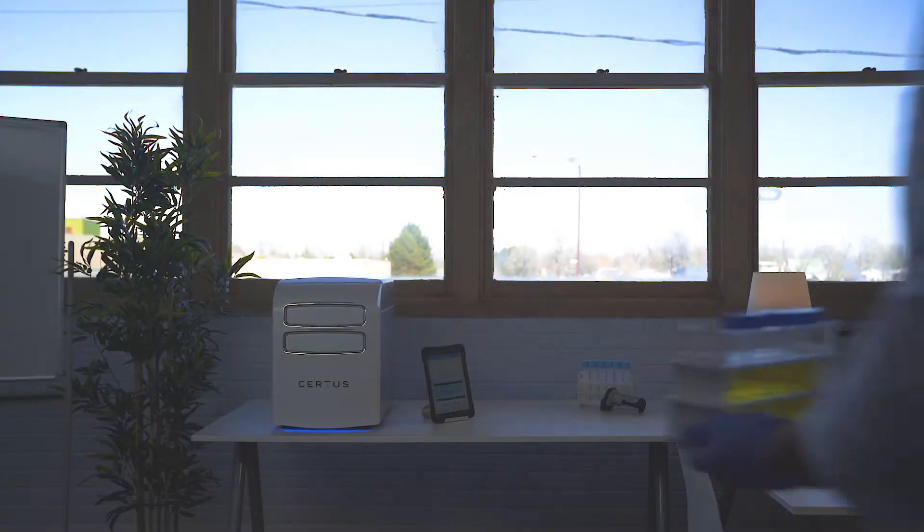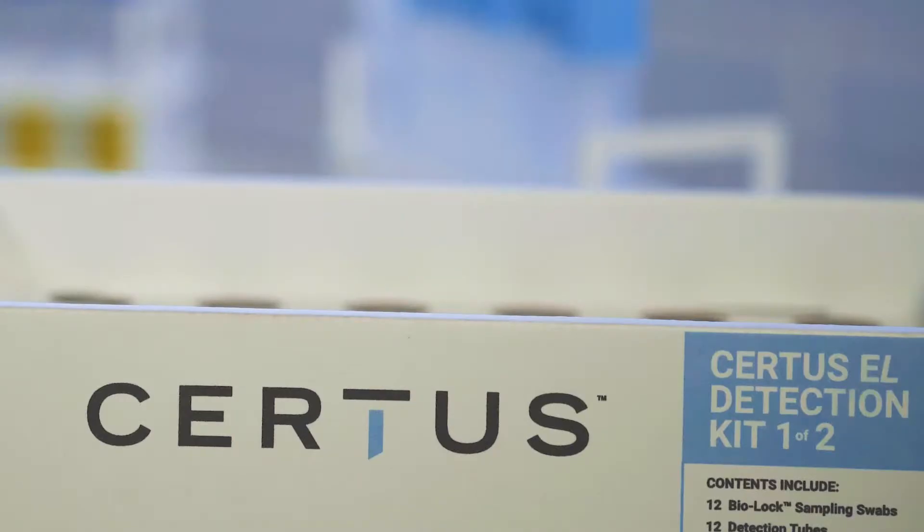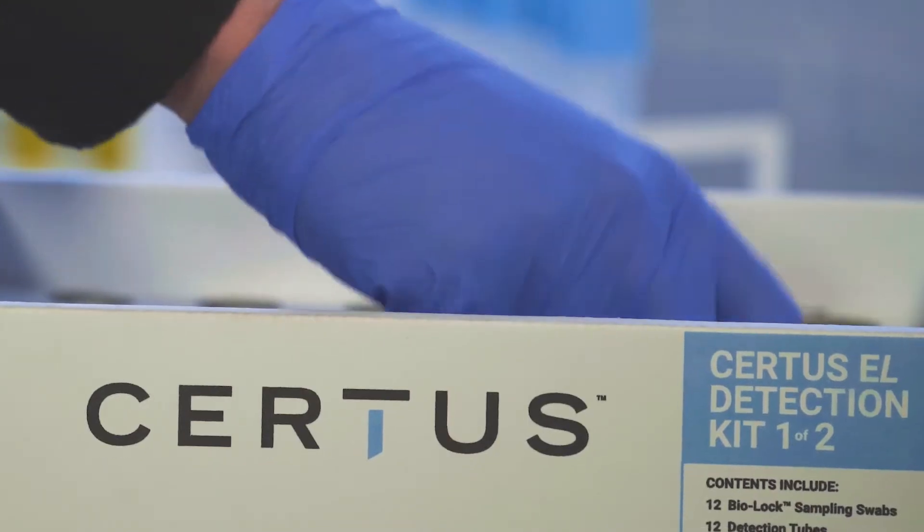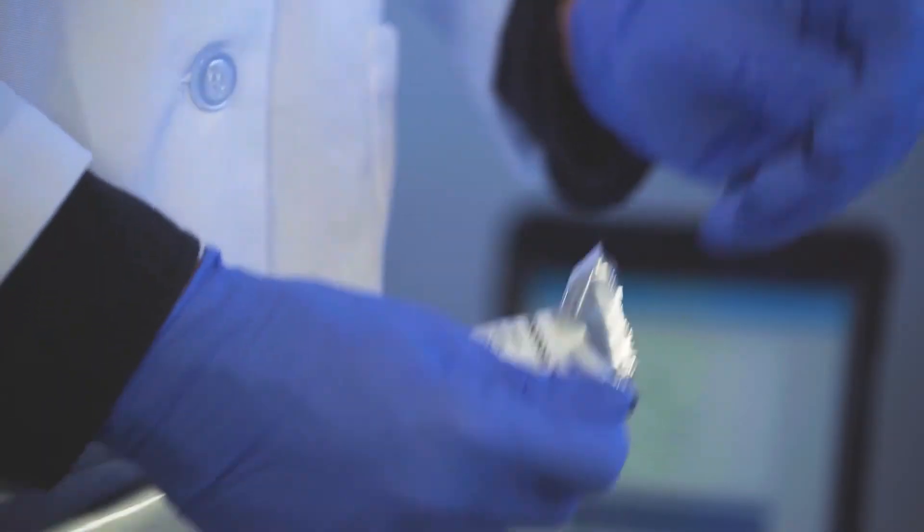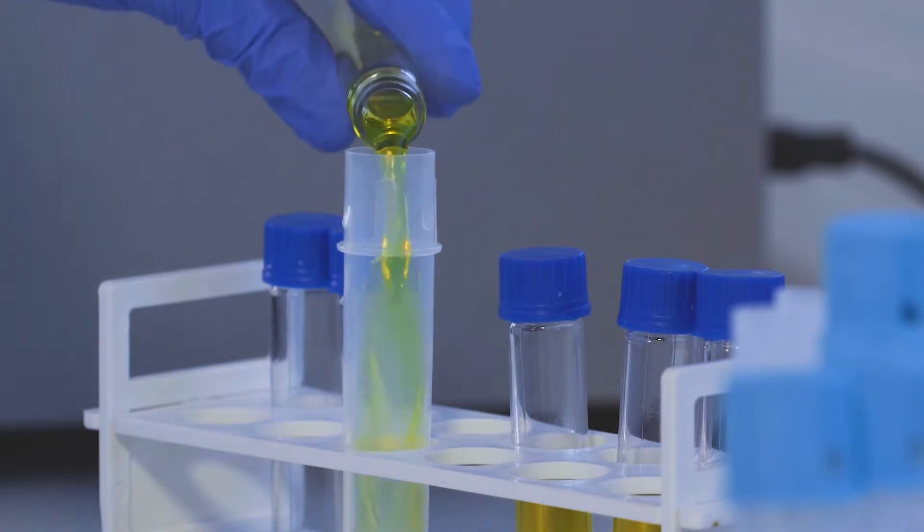With a simple power and network connection, the detection unit can be set up and used safely in any room. After sampling, go to the detection unit, open the protective foil pouch detection tube, and simply add the pre-measured selective growth media.